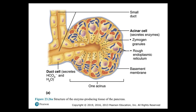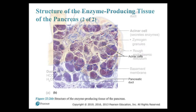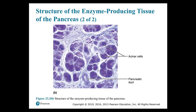Figure 23.26A shows the structure of the enzyme-producing tissue of the pancreas, with acinar cells responsible for secreting enzymes. We can see the zymogen granules in the acinar cells, the rough endoplasmic reticulum (which produces proteins/enzymes), the basement membrane, and the duct cell which secretes bicarbonate and water. Figure 23.26B is a histological image of the pancreas consisting mostly of acinar cells. Pancreatic islets producing insulin and glucagon are not shown in this figure but will be covered in endocrinology in Anatomy and Physiology II.